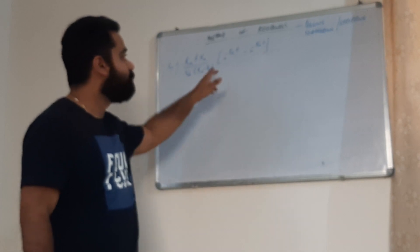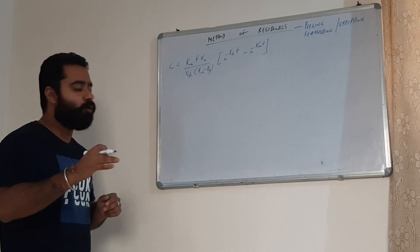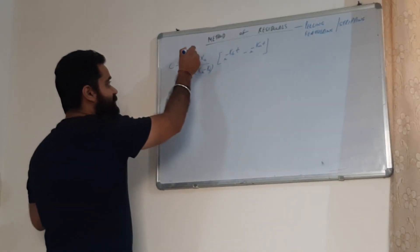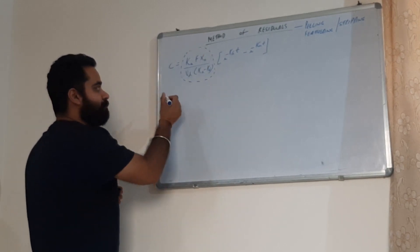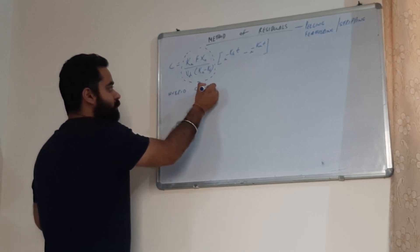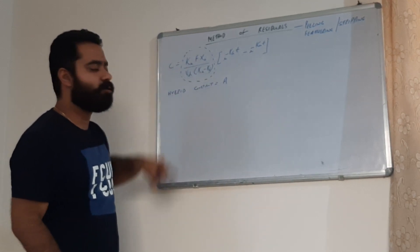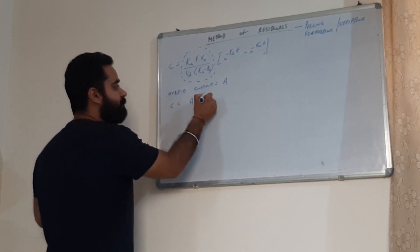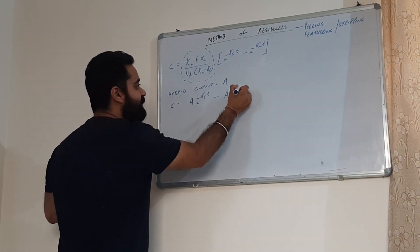We would have to resolve both these components, and this is called the method of residuals. What we exactly do in the method of residuals is: the first step is that we consider this term — this whole term — as a constant, as a hybrid constant called capital A.